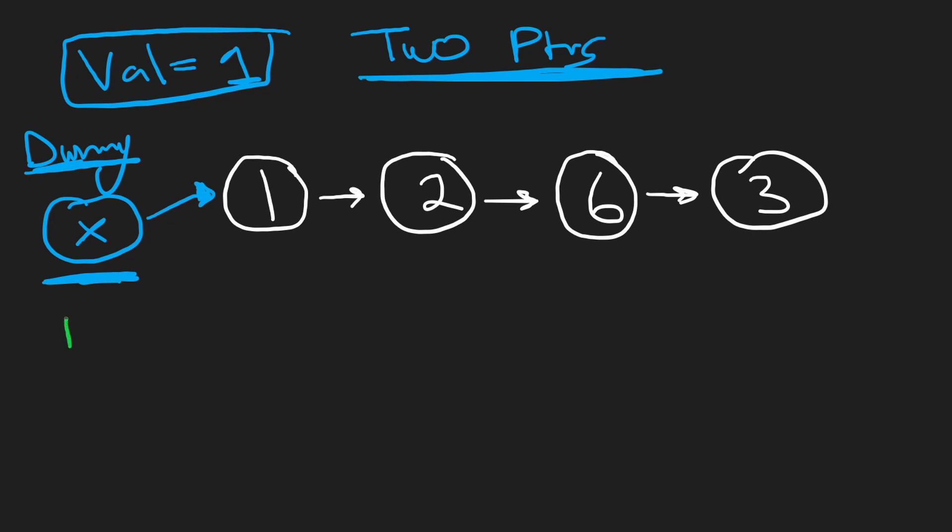So we're going to have two pointers. I'm going to have a previous pointer. I'm going to initialize it over here with the dummy node. I'm also going to have a current pointer. I'm going to initialize it to the actual head of the linked list. And we check our current value and see that it's equal to the value that we want to remove from the linked list. So what do we do? We update the pointer because that's what's going to allow us to actually remove this node. So now our dummy node is going to point over here.